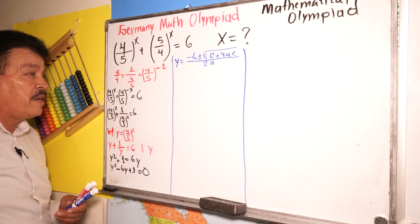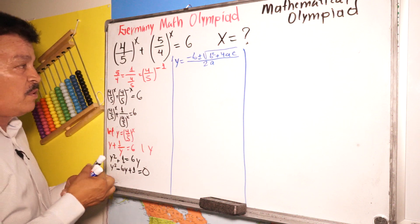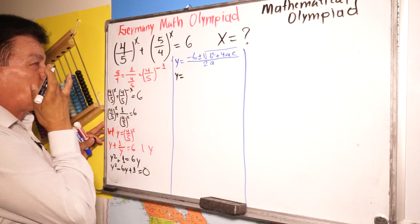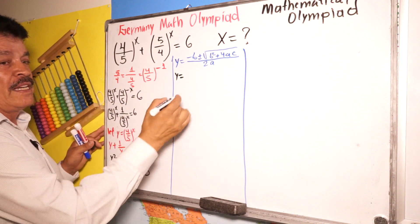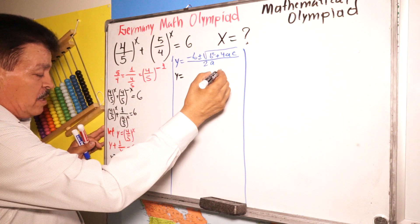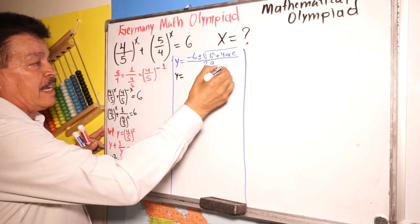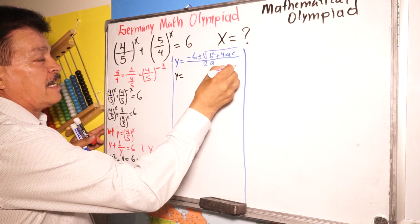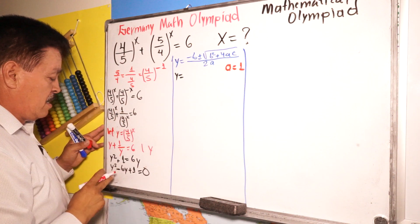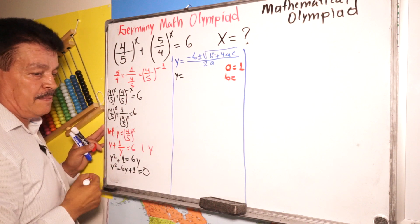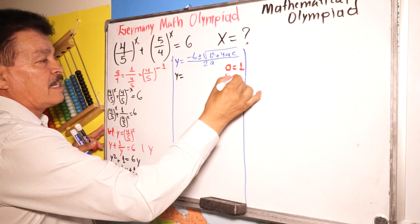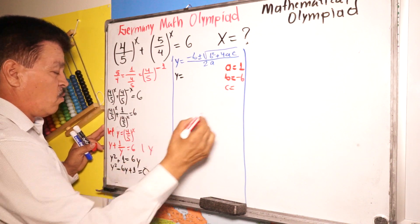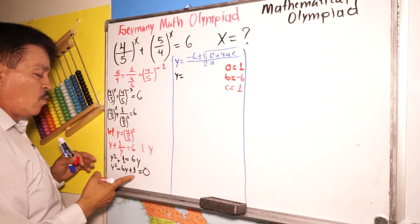Now substitute the formula. We have A equals one, B equals negative six, and C equals one. Substituting into the formula gives us: Y equals negative negative six plus or minus the square root of negative six squared minus four times one times one, divided by two times one.